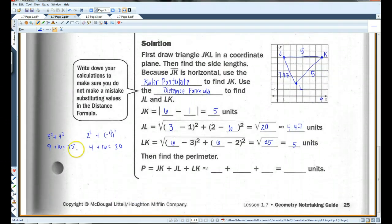So, the perimeter is just to add all three sides together. JK, in the diagram, is 5. JL, 4.47. And LK is 5. So, this is going to be 14.47 units. Alright, let's go on to page 3.